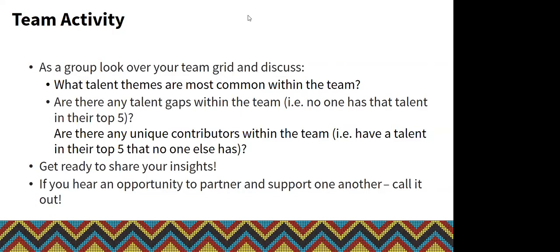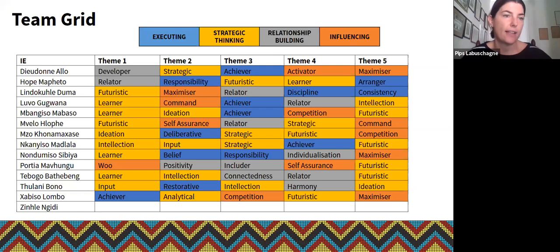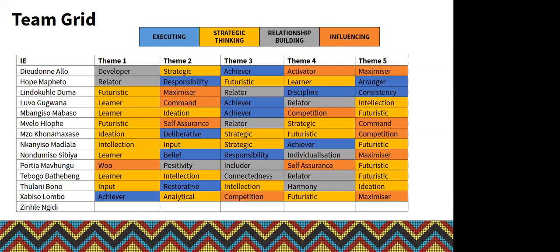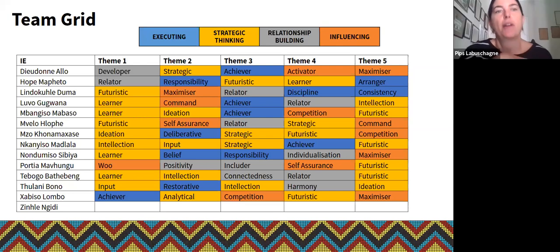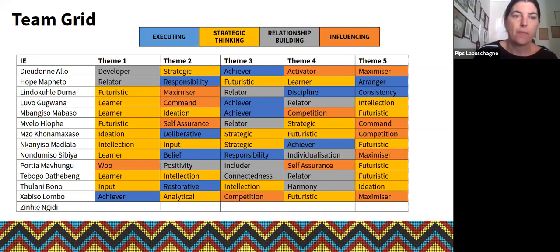We could talk through it — I think it's much better that way. So I'm going to put the grid up. Is the grid more helpful or do you prefer the graph when looking at insights? Okay, perfect. So this is basically everybody's top five themes — Zentler had some connectivity issues so we can populate his when we have it. Any thoughts, any opportunities to partner, anyone standing out, who's got only one of a particular theme or strength?